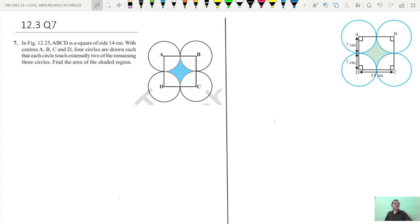X is 12.3, question number 7. ABCD is a square here. This is a square.